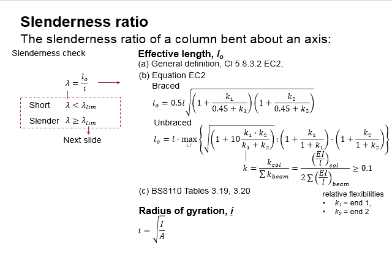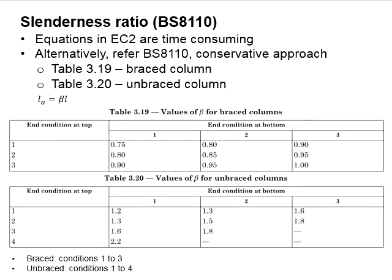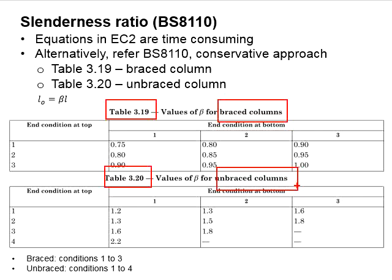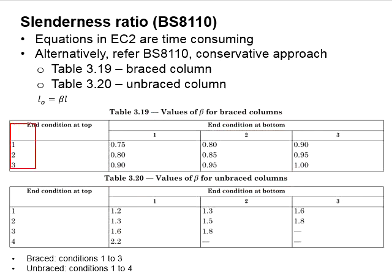You may also determine the effective length by referring to BS8110. Table 3.19 is meant for braced columns, while Table 3.20 is meant for unbraced columns. For braced columns, there are conditions 1 to 3. For unbraced columns, there are conditions 1 to 4.